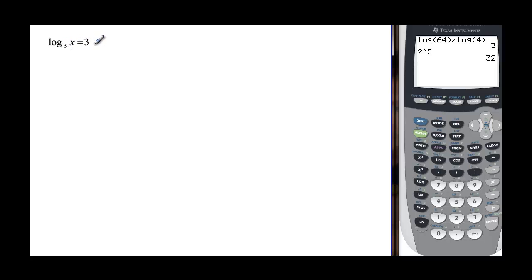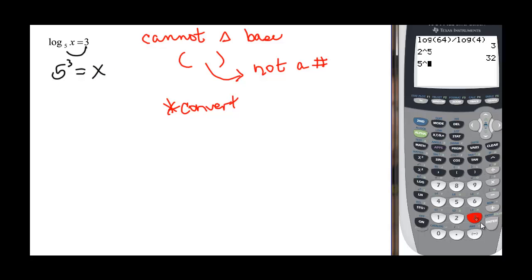Log base 5 of x is equal to 3. So we can convert. We cannot change the base. Anybody know why we can't change the base? The reason we can't change the base is because inside the parentheses is not a number. The only time we can change the base is if we have a number, all our numbers are on the log side. But they're not here so we have to convert. We take our 5, hop across and get the exponent of 3 equal to x. And if you don't know what 5 to the 3rd is, if you don't recognize that that's 125, you can go to your calculator and say 5 carat 3 and find out that sure enough x is equal to 125.